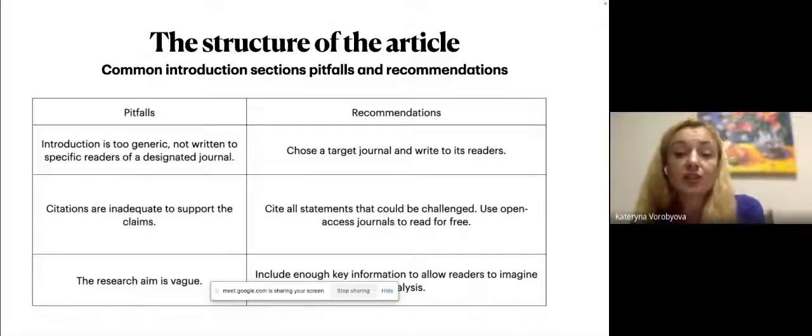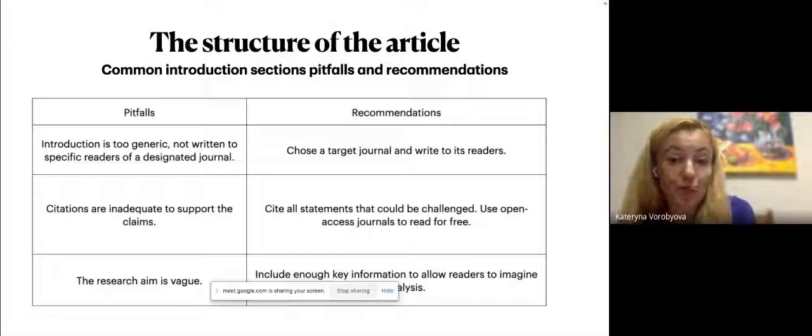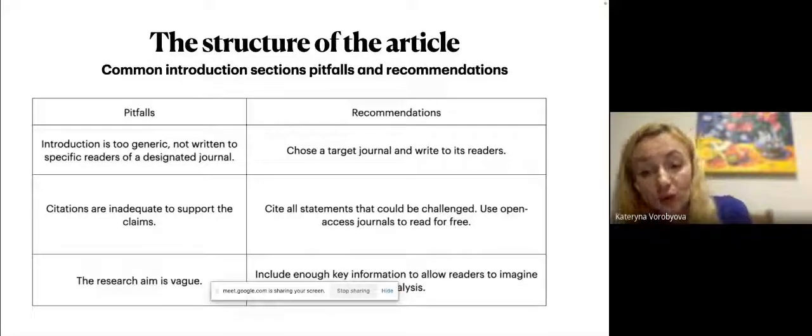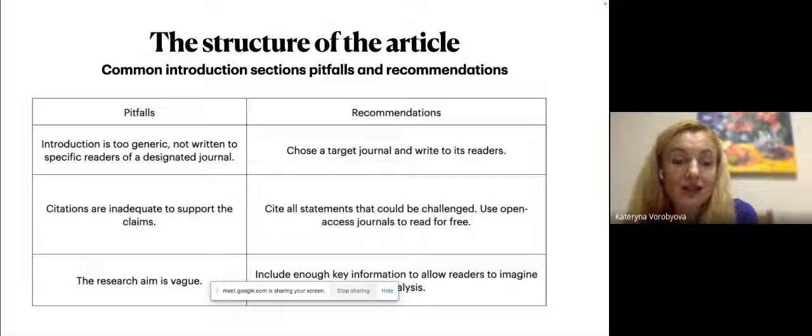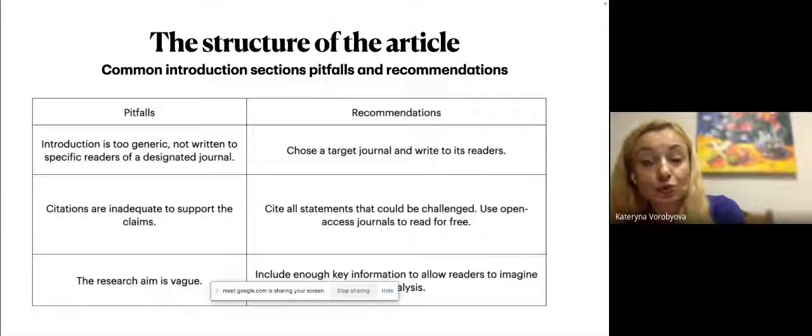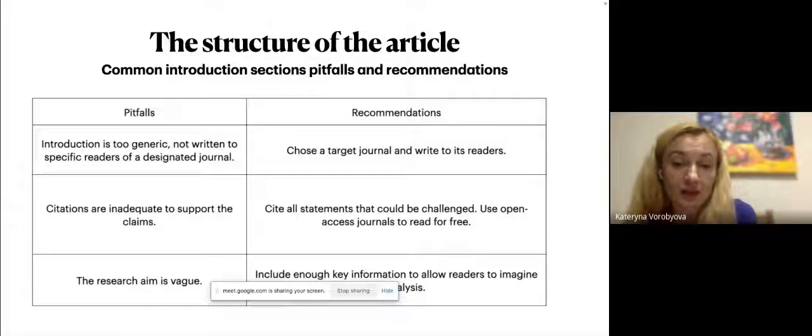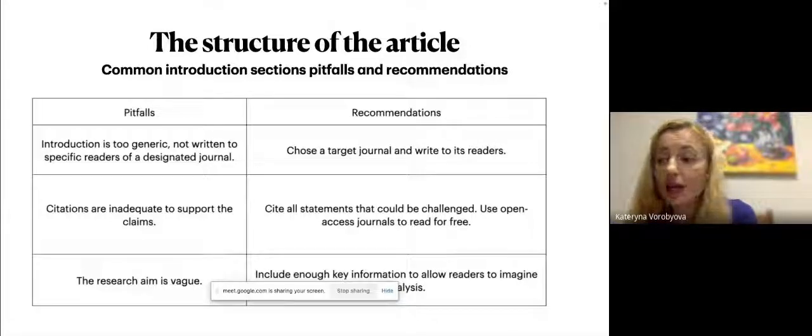Sometimes researchers use citations in an inadequate way to support the claim. So the recommendation could be cite all the statements that could be challenged. If a claim can be debated, it should be supported by one or more citations. And of course, to find articles which is feasible to your topic or feasible to your literature, you need to use either closed access a journal or open access journal. There's variety of websites. And even if you go to science direct or elsewhere, there are journals and scholars already published in an open access article that you can simply download and work on it.